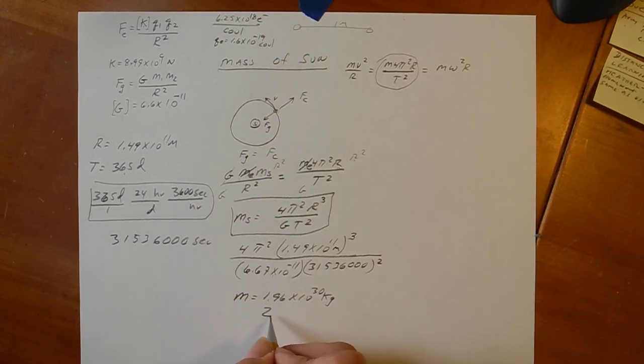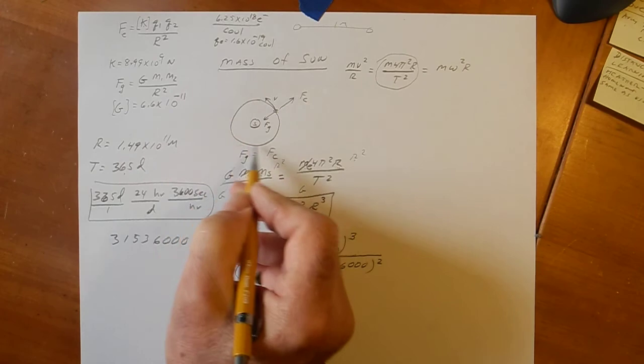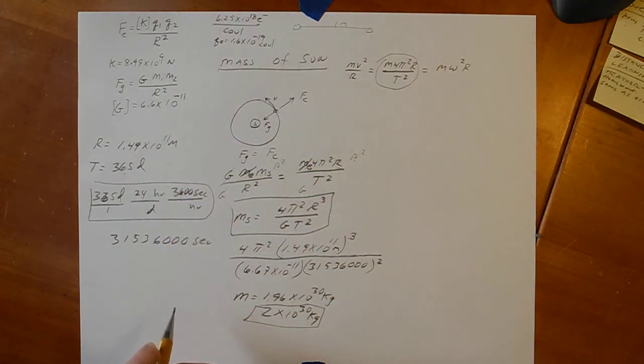Okay. Most people say the sun is about 2 times 10 to the 30th kilograms. This is not a perfect calculation because the earth does not make a perfect circular orbit. It's elliptical and some other reasons. But, you know, hey,